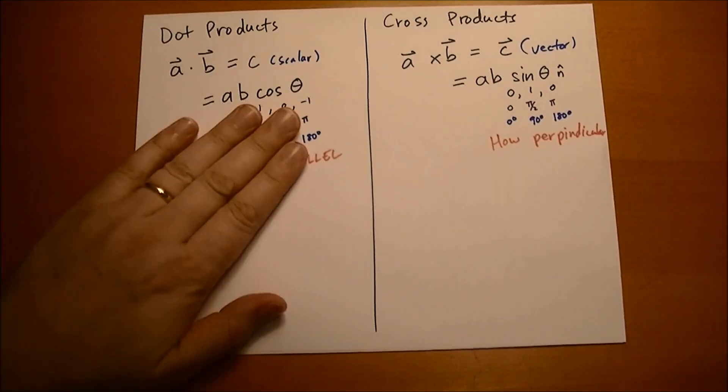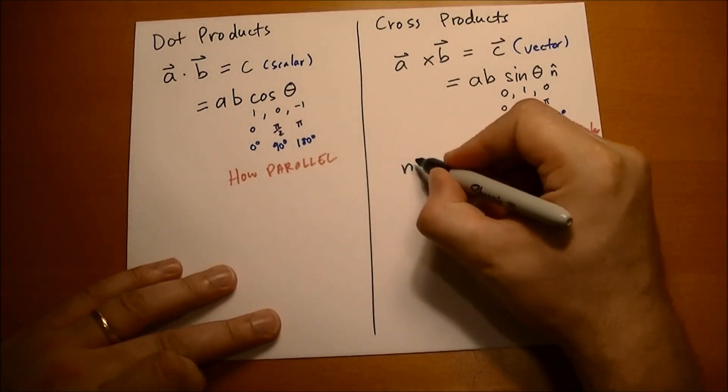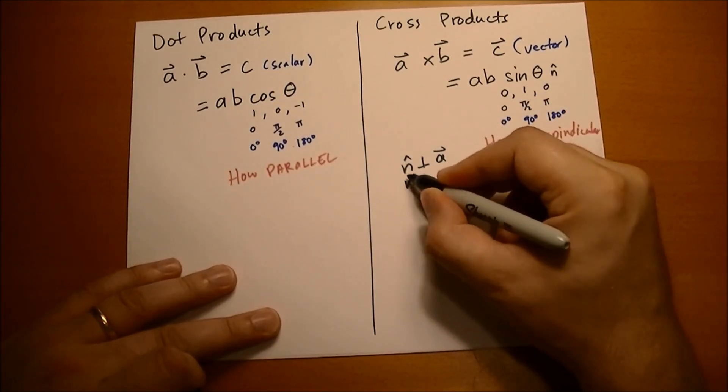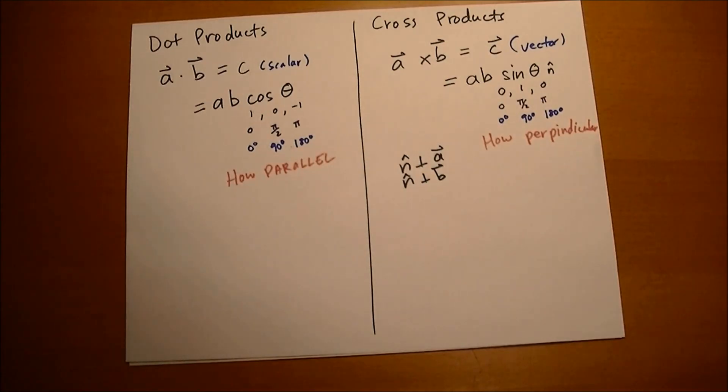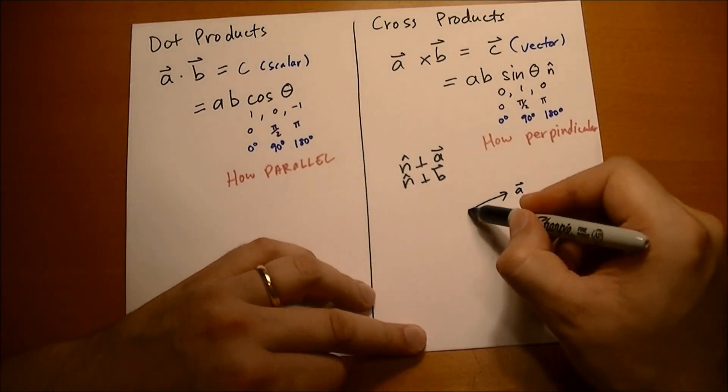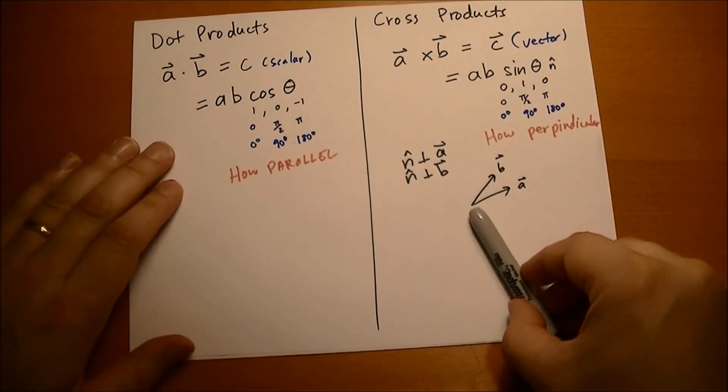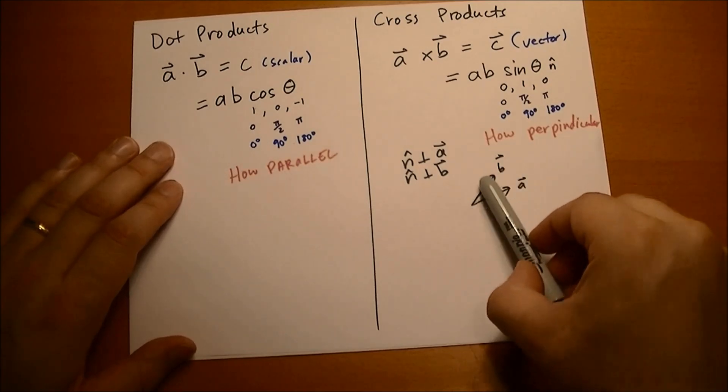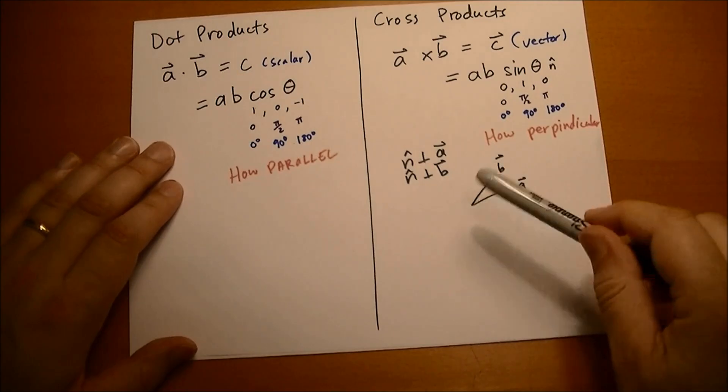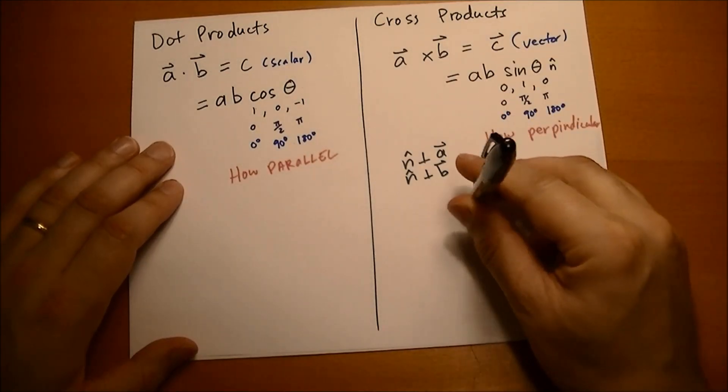The one weird note, since this is a scalar, we don't need to consider the direction of the dot product. Since this is a vector, we have to consider the direction, and the only rule is that n hat must be perpendicular to the a vector and perpendicular to the b vector. So basically, the cross product has to be perpendicular to both of the vectors that make up the product. In the plane of this paper, if you chose something perpendicular to a, it's obviously not perpendicular to b. What you have to do is get out of the page plane and deal with vectors that point into or out of the page.